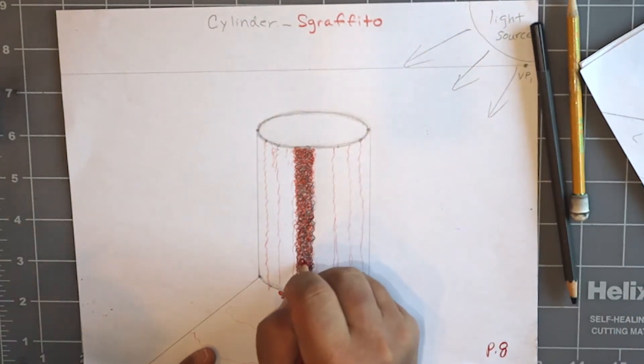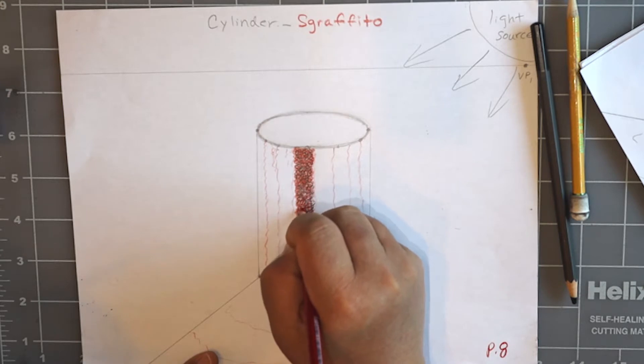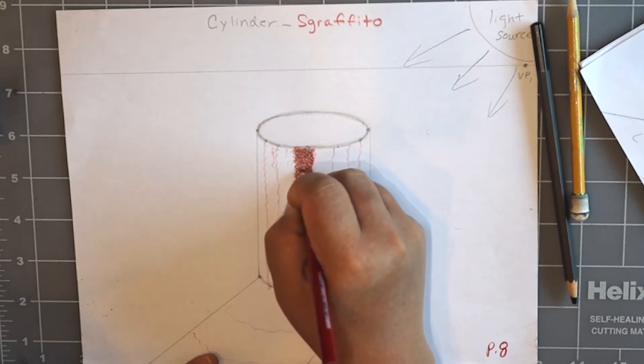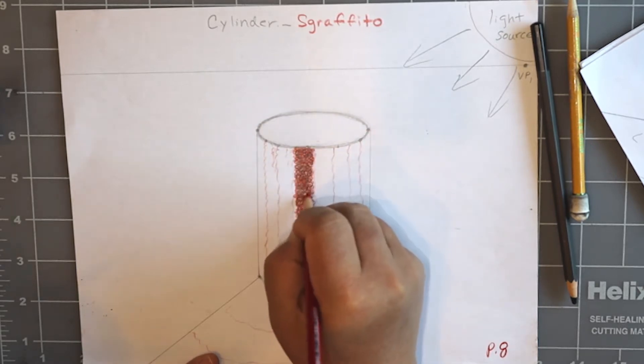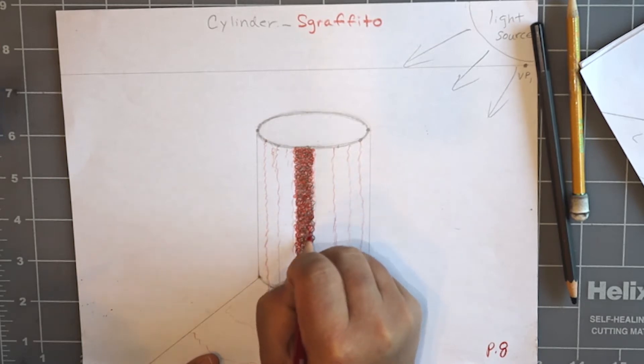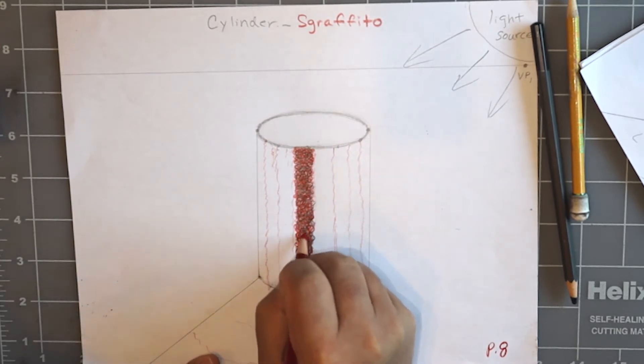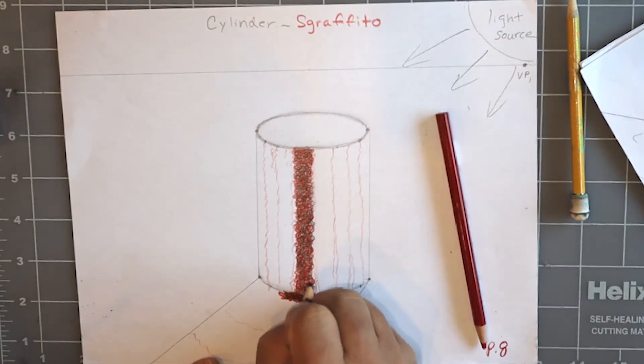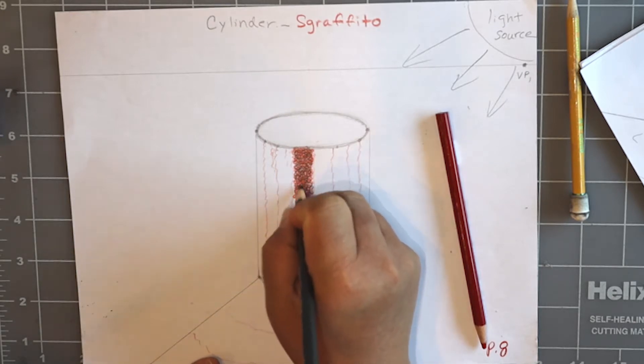Now, I'm going to go in and do a second layer of red and just fill in some of those little white areas. And also, sometimes the black can kind of make your colors a little bit duller, more grayish. So, I'm just kind of brightening it up with a little bit more of this color.